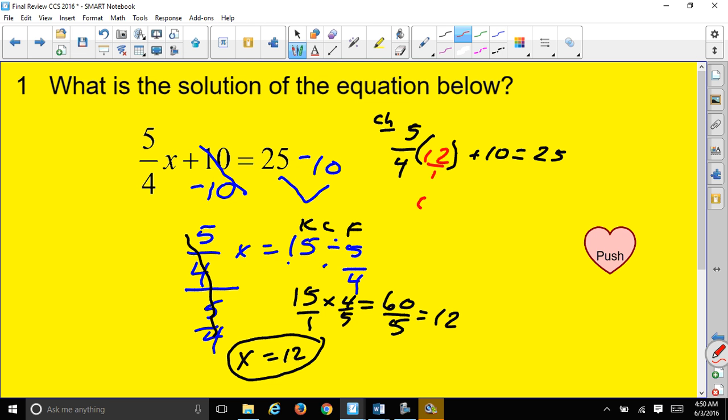Let me put a 12 in there and I'll make that 12 over 1 so that way I can multiply my fractions. 12 times 5 is 60, 4 times 1 is 4, plus 10, bring that down, equals 25. Well, 60 over 4, if you reduce that down, that reduces down to 15.